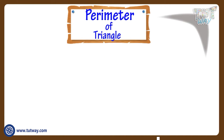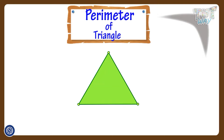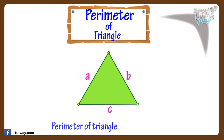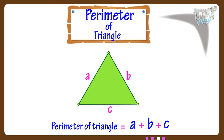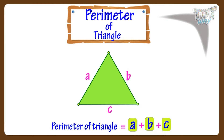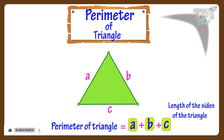Like here is a triangle with its sides A, B and C. So the perimeter of this triangle will be A plus B plus C — that is the sum of all the sides of a triangle. So the formula for finding the perimeter of a triangle is A plus B plus C, where A, B, C are lengths of sides of the triangle.